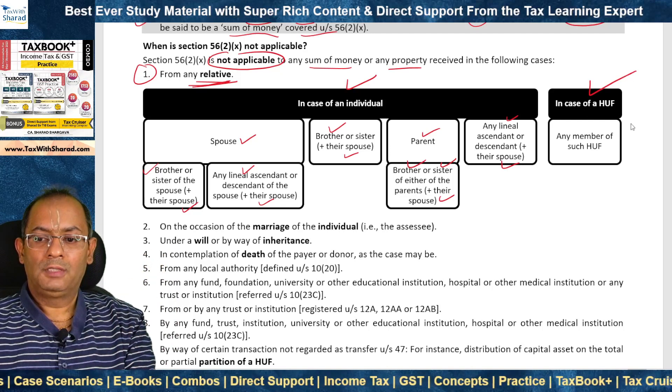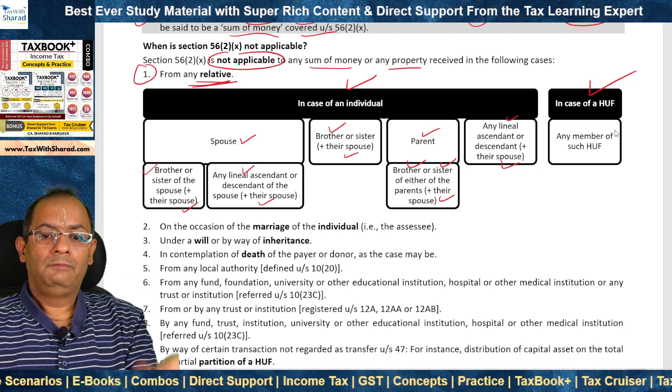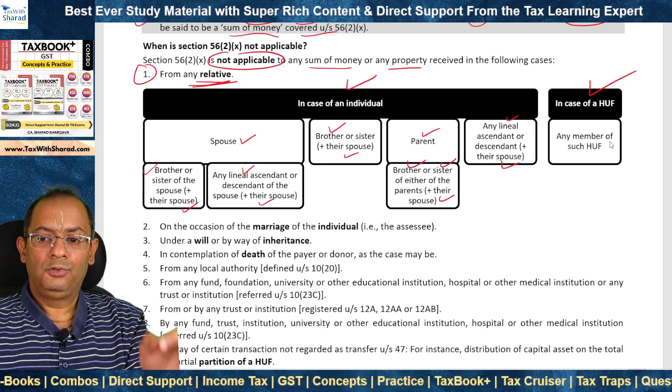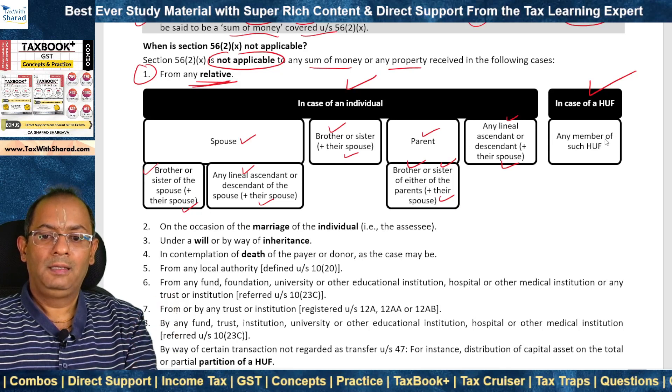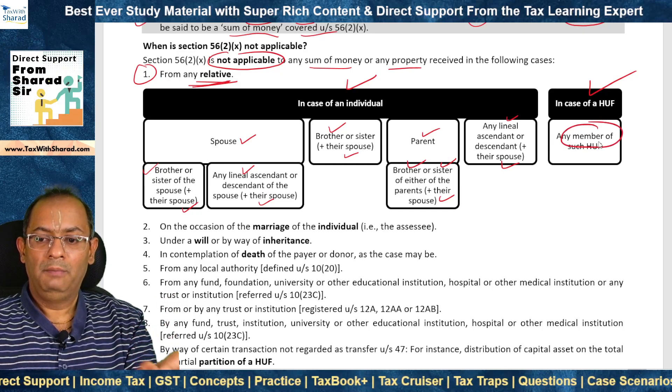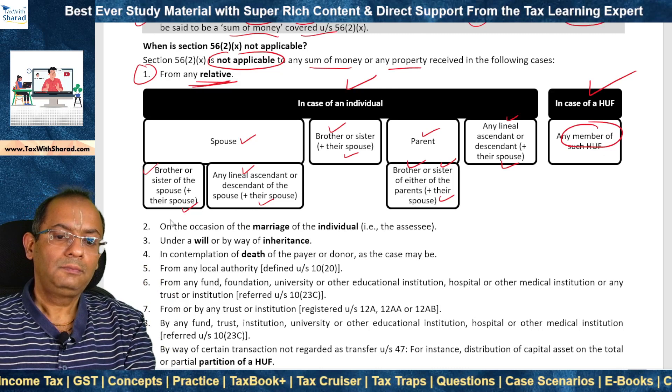Also relative includes: brother or sister of the individual and their spouses; parent of the individual; brother or sister of either parent and their spouses; any lineal ascendant or descendant and their spouses — all are treated as relatives of the individual. If the individual receives a sum of money or property from a relative, it is not taxable under Section 56(2)(x). As far as HUF is concerned, Section 56(2)(x) does not apply if the HUF receives money or property from a member of such HUF.